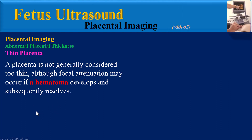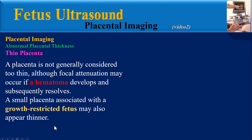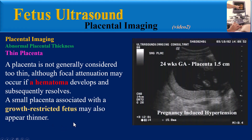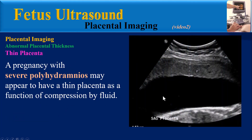A placenta is not generally considered too thin, although focal attenuation may occur if a hematoma develops and subsequently resolves. A small placenta associated with a growth-restricted fetus may also appear thinner — as seen in this ultrasound image showing pregnancy-induced hypertension and a thin placenta at 24 weeks gestation. A pregnancy with severe polyhydramnios may appear to have a thin placenta as a function of compression by fluid. This ultrasound image at 30 weeks gestation with polyhydramnios shows a thin placenta measuring 1.5 cm.